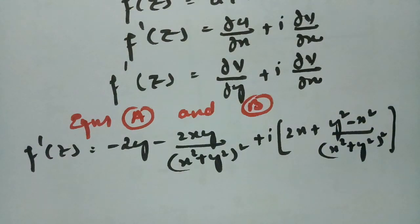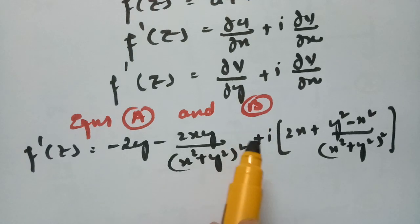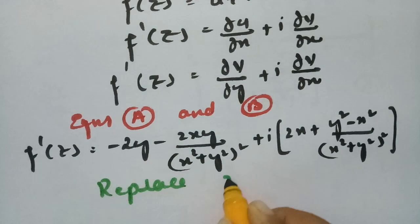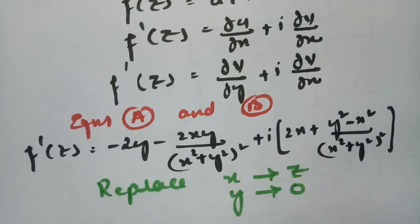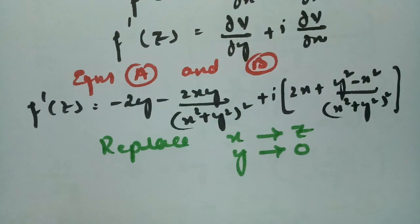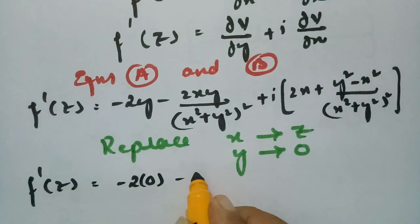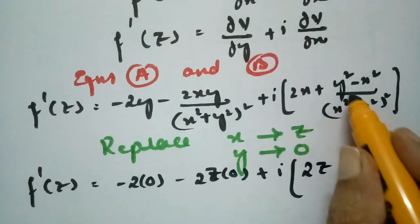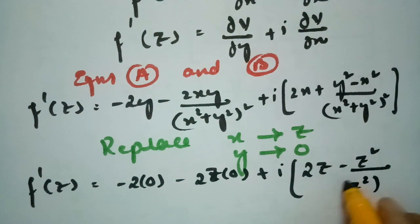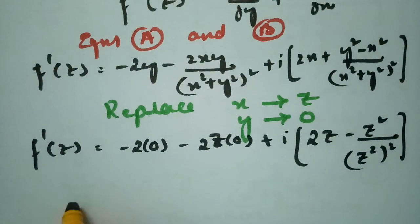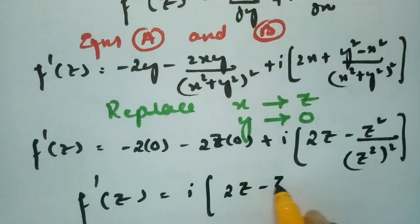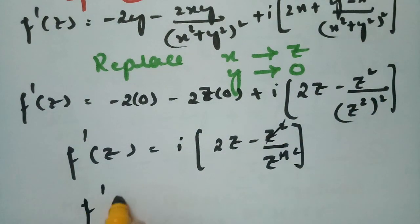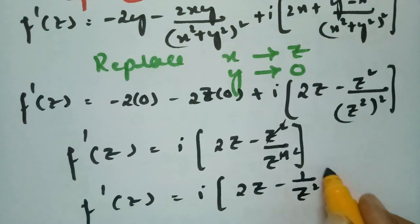After substituting both values from equations a and b, according to the Milne-Thomson method I now replace x by z and y by 0. So f'(z) equals: the first term becomes 0, and i times of 2z minus z square divided by z power 4. Cancelling z squared gives f'(z) equal to i times of 2z minus 1 by z square.